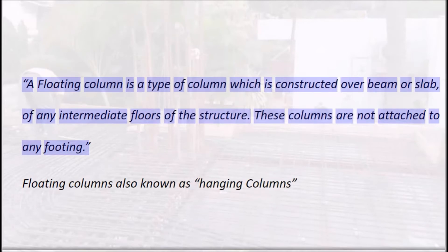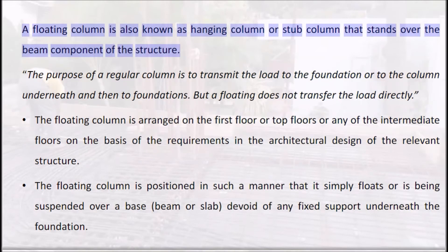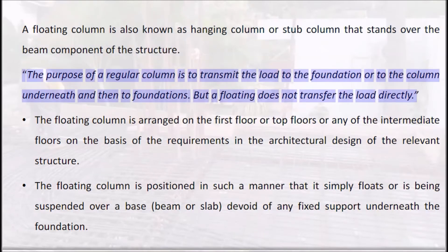A floating column is a type of column which is constructed over the beam or slab of any intermediate floor of the structure. These columns are not attached to any footing. Floating columns are also known as hanging columns or stub columns, and they stand over the beam component of the structure.